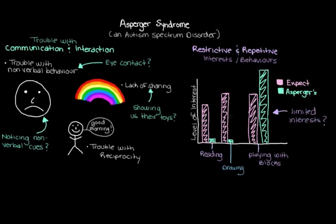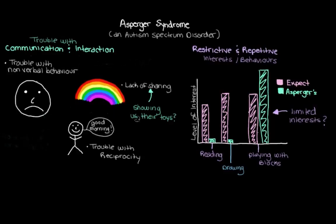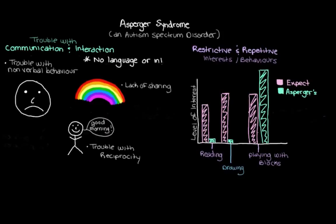You might be wondering: what's the difference between Asperger's and Autistic Disorder? While the two are very similar, the main thing that sets Asperger's apart is that kids with Asperger's don't appear to have any delays in language or intellectual development — they don't miss key language milestones like their first word. Whereas for kids with Autistic Disorder, parents often notice pretty early on that their child seems to be missing language milestones or just doesn't seem to be developing the way they should.